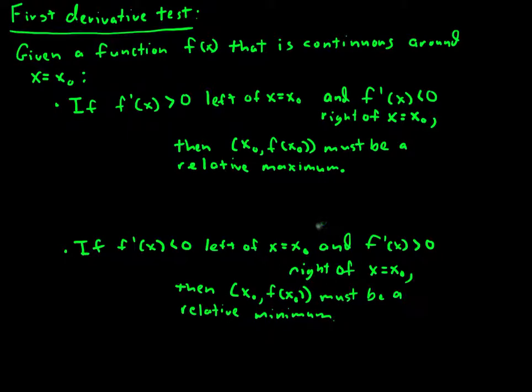So the last question that you might ask about this is why? Why does this have to be true? Well, if I'm looking at this and I say, f prime of x is greater than zero, that means that f is increasing to the left of x-naught.